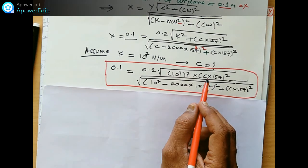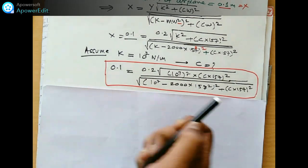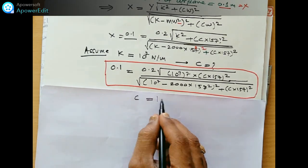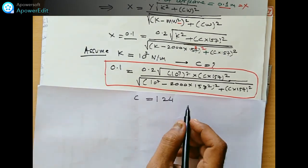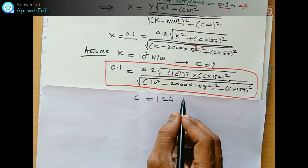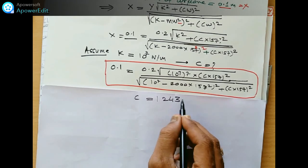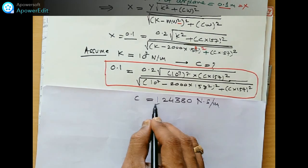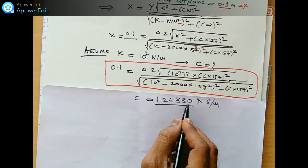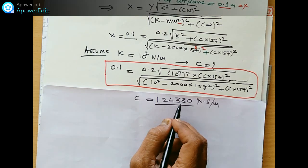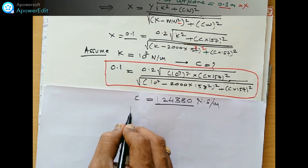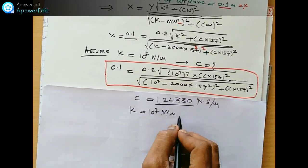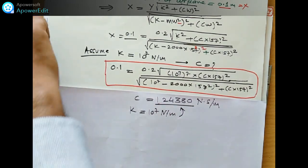So c is unknown. Solving this equation we can find out the value of c is equal to 1124380 newton second per meter. So stiffness we are considering 10 raised to 7 newton per meter and damping coefficient is this much.